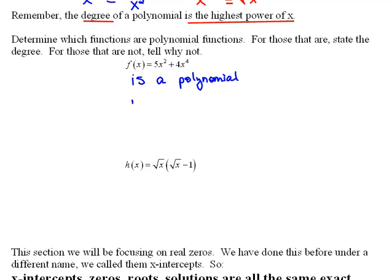Now, for the degree, remember the degree is the highest power of x. This is not in the proper descending order, but that doesn't matter. Our degree here is still 4 because that's the highest power.